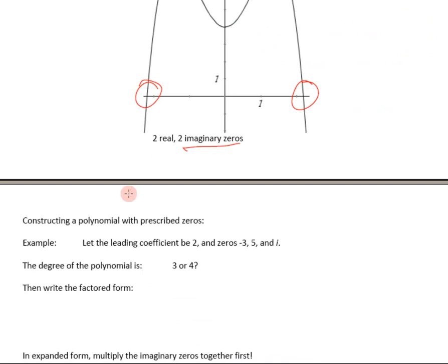Alright, let's move down here, look at constructing a polynomial with the prescribed zeros. So now I tell you the zeros, you make the polynomial as before up there. Alright, here's the zero, the leading coefficient is 2. The zeros are negative 3, 5, and i.